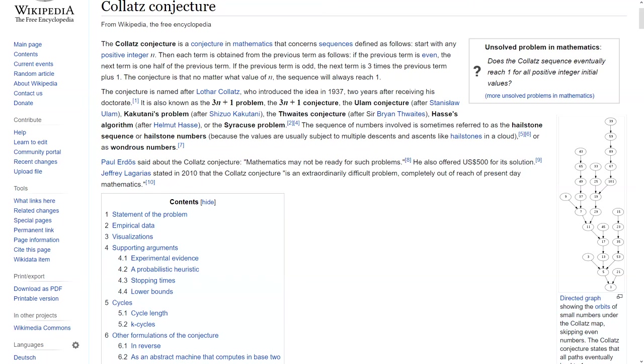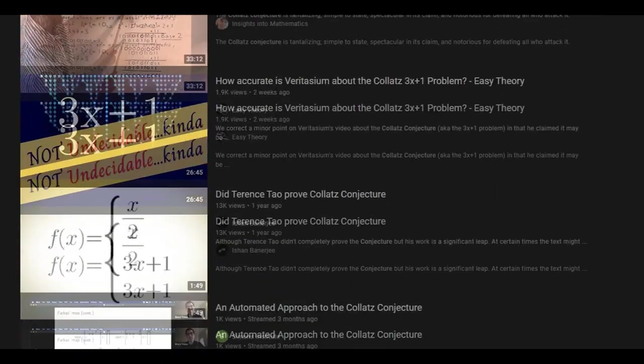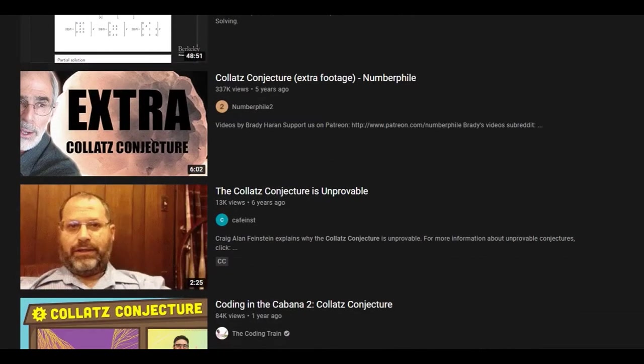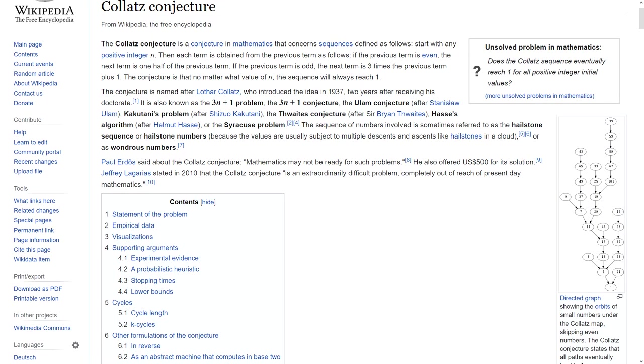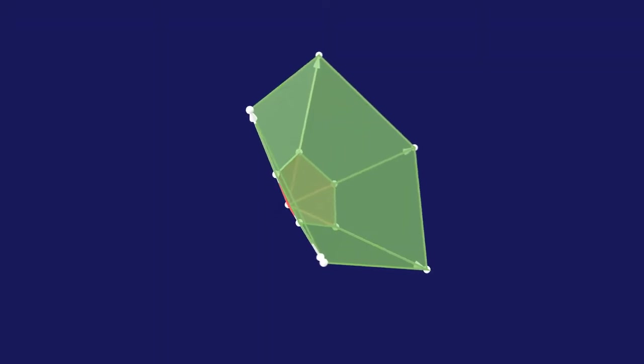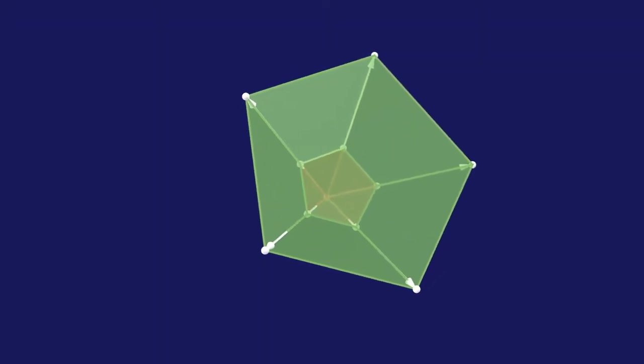The Collatz conjecture is commonly presented as the simplest unsolved math problem, and there are quite a few videos on it already. I've never found a video that covers my favorite analysis method, which involves hyperpyramids and their frustrums, so I figured I'd make one myself.